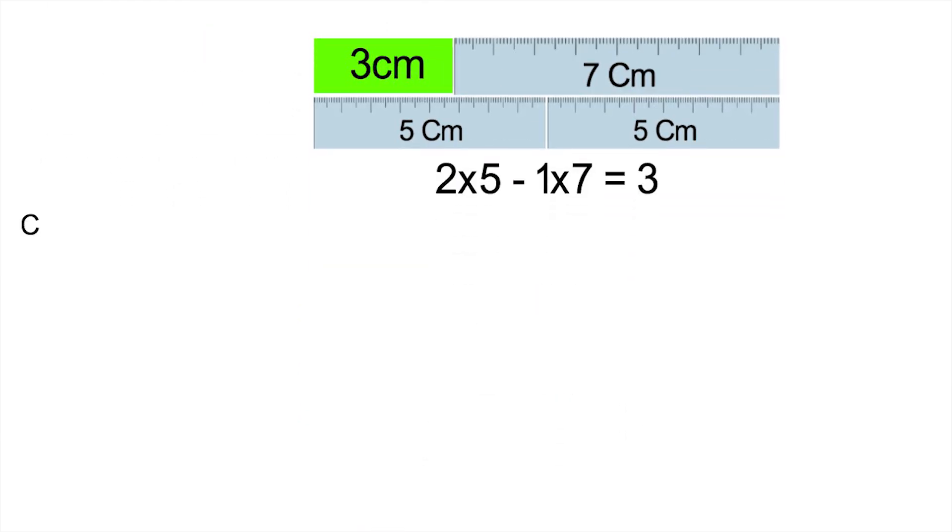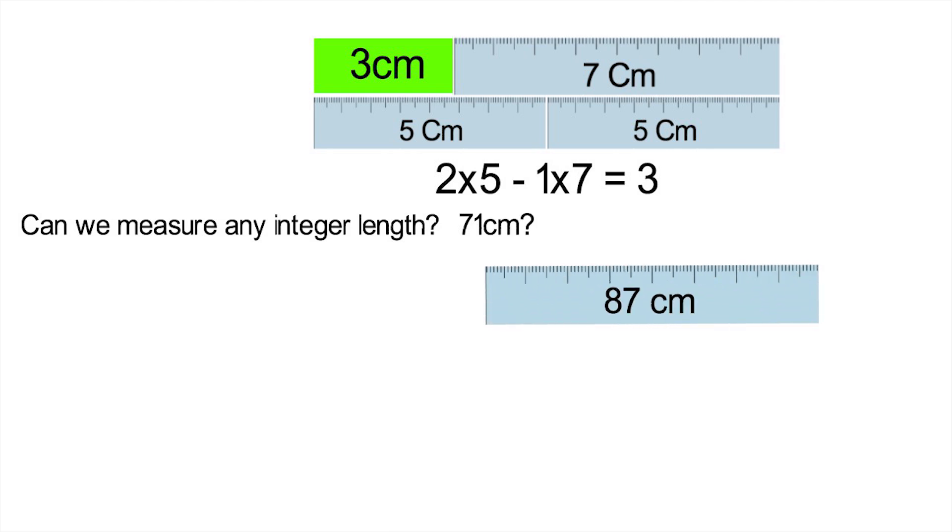Now, the generic question is, can we measure any integer length? Could we measure 71 centimeters? Or what if instead we had an 87 centimeter ruler and a 39 centimeter ruler? What could we measure then?